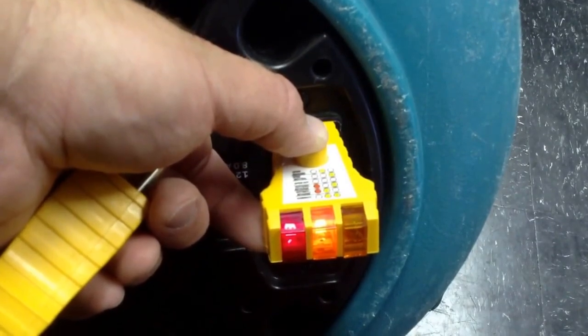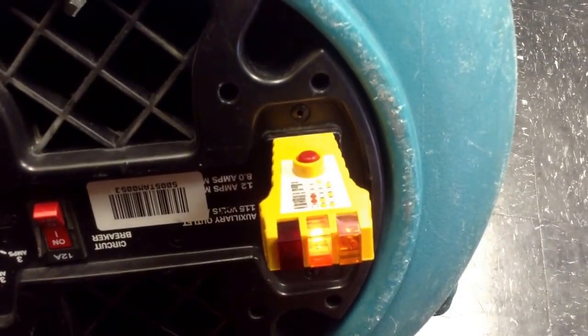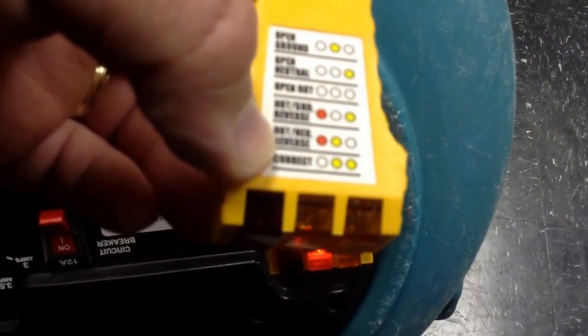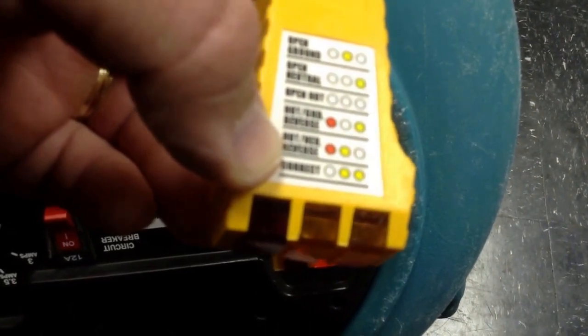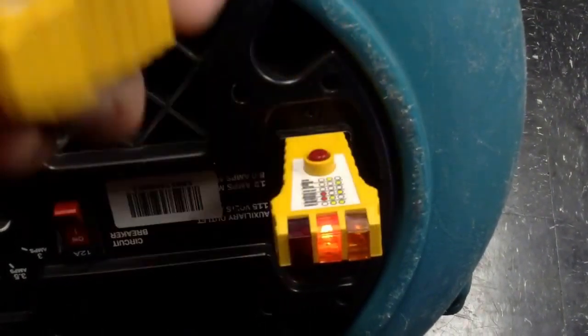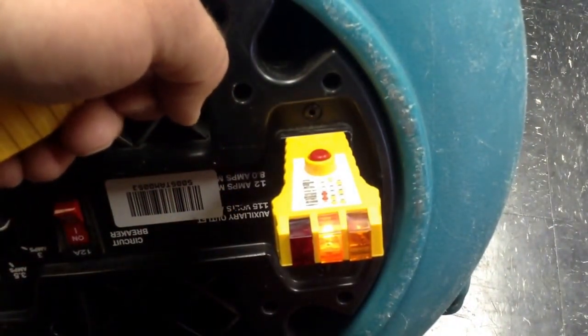So we have the red light on the left and the yellow light in the middle. It means when it's trying to trip, our hot and neutral are reversed, the second to bottom scenario. So this outlet on this piece of equipment is wired incorrectly.